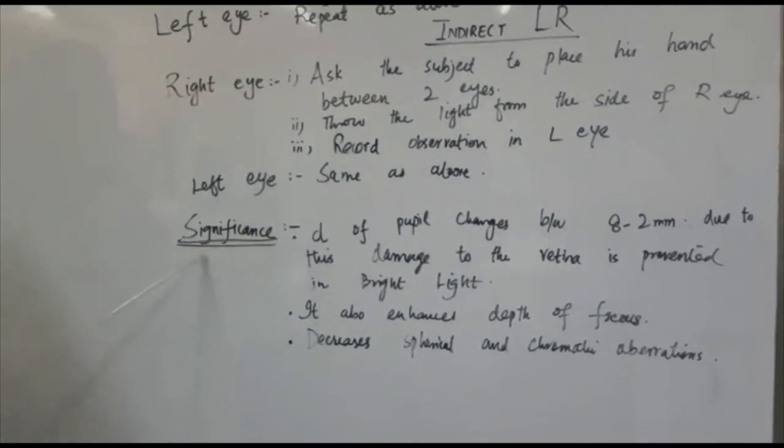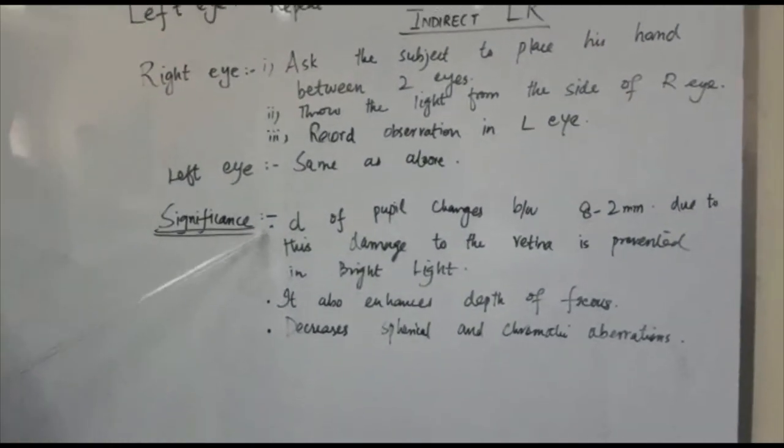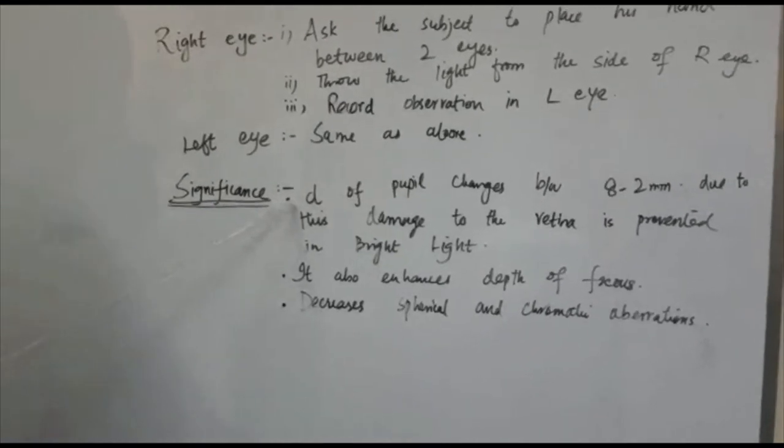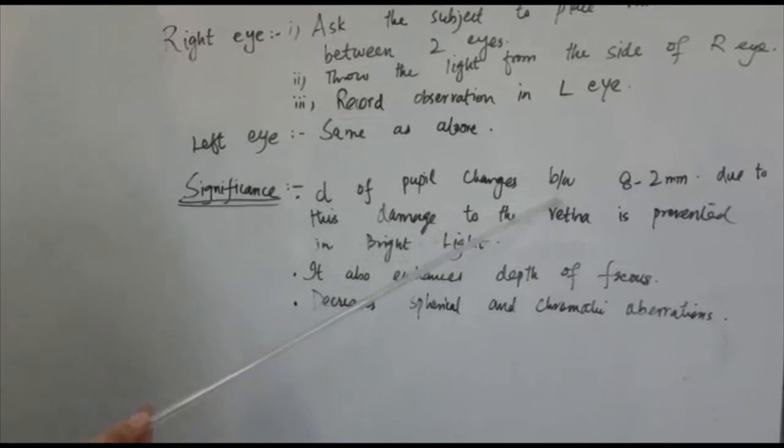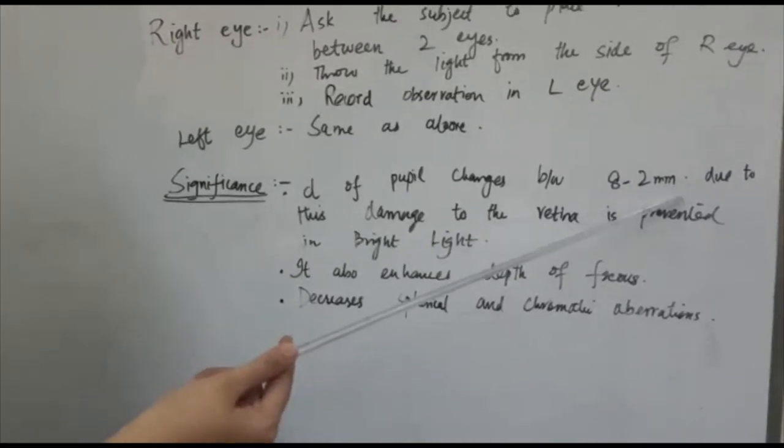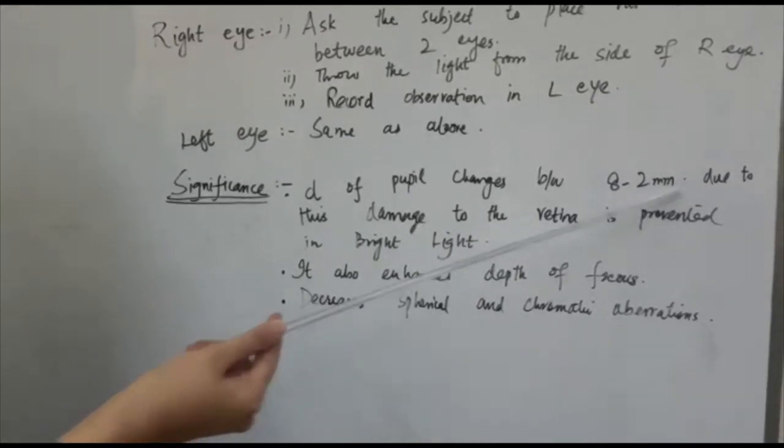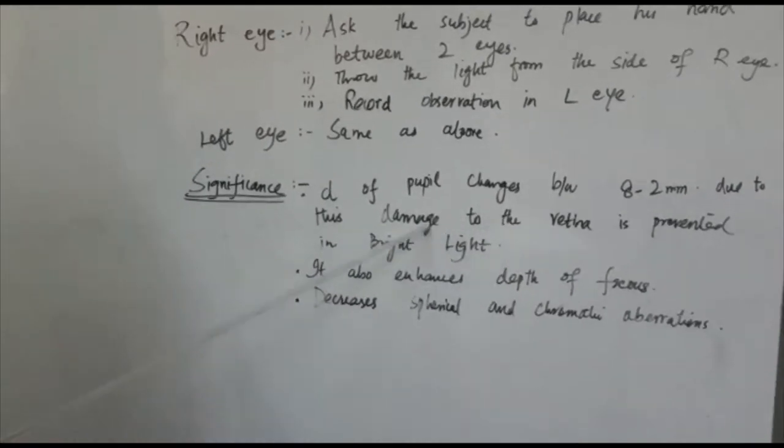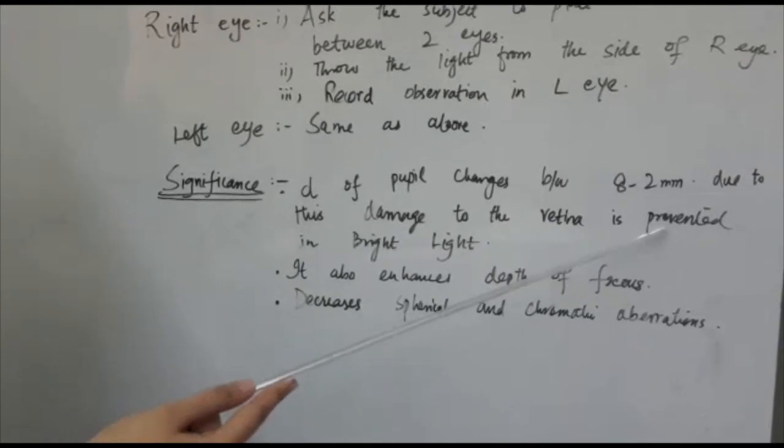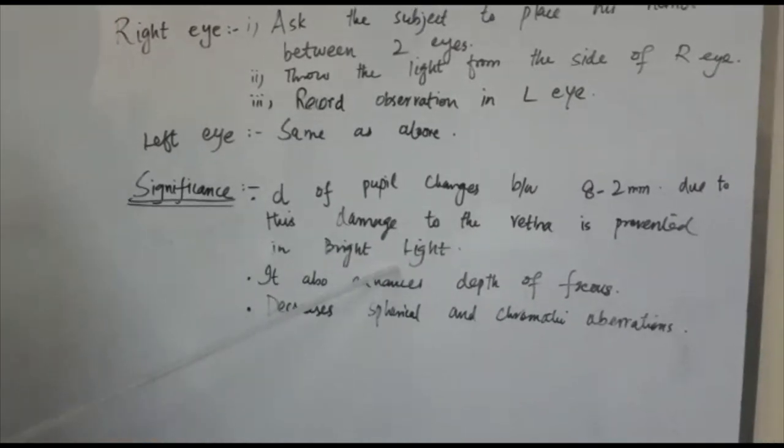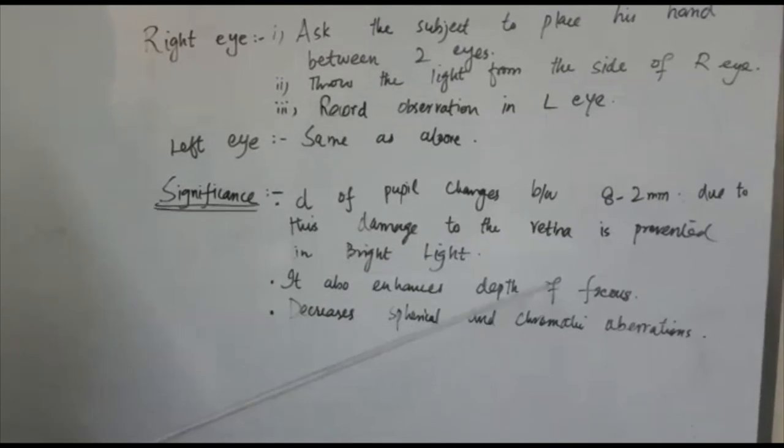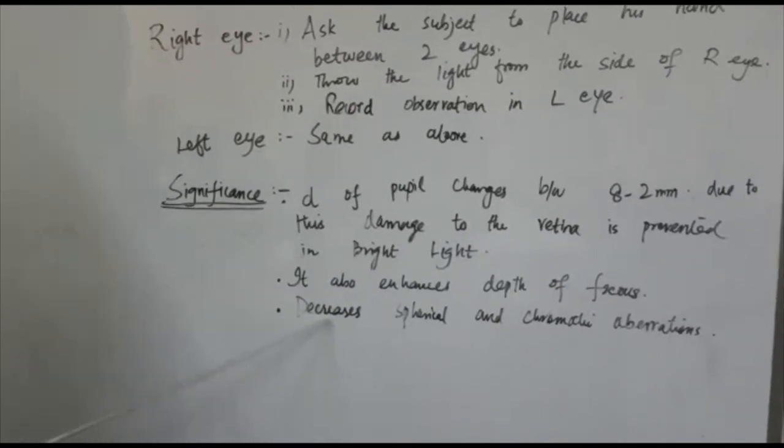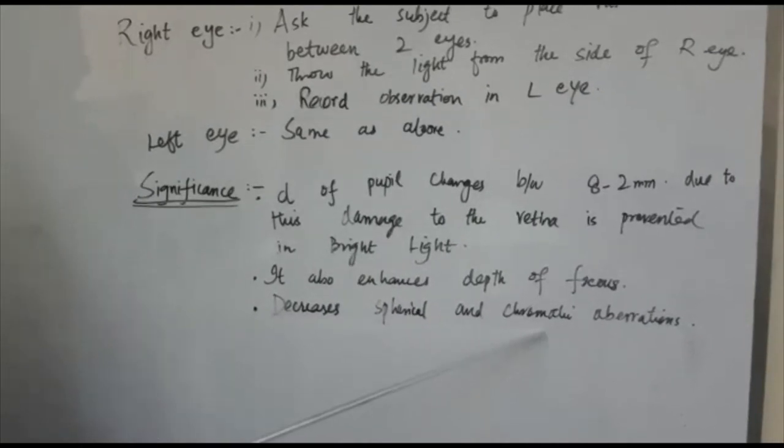Now there is a question that arises: why are these reflexes important? Basically, the diameter of pupil changes between 8 to 2 mm during light reflexes or pupillary reflexes. Due to these reflexes, damage to the retina is prevented in bright light. It also enhances depth of focus. Moreover, these reflexes also decrease spherical and chromatic aberrations.